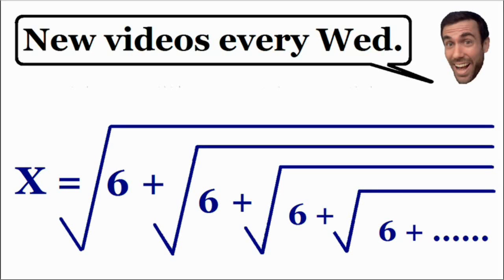Notice that we have one square root which is inside of another square root which is inside of another square root, and this goes on forever and ever. This is what we call a nested radical.